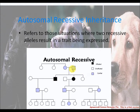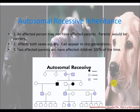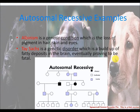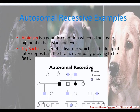Here is progeria as an example. Two affected parents will have affected children 100% of the time. An example of autosomal recessive disease includes albinism, a genetic condition involving the loss of pigment in hair, skin, and eyes. Another is Tay-Sachs disease, a genetic disorder involving a buildup of fatty deposits in the brain, eventually proving to be fatal.